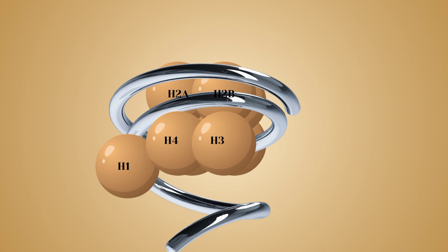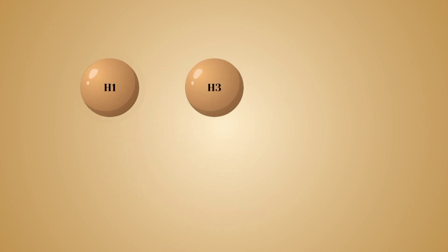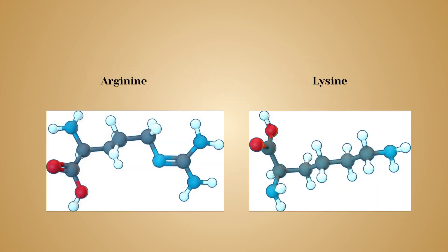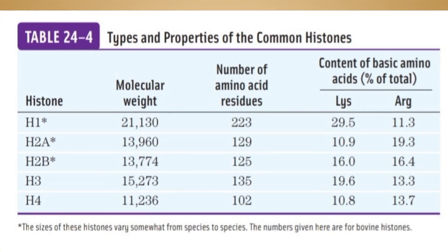Histone proteins are of five types: H1, H2A, H2B, H3, and H4. They are rich in arginine and lysine amino acids. These are the properties of different types of histone proteins.